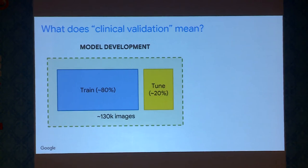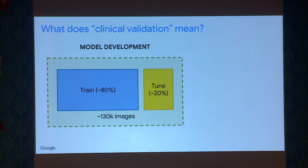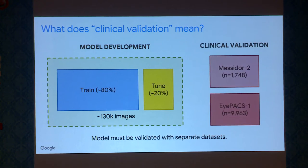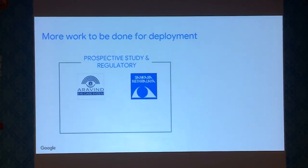When we talk about the performance of the model, one really important thing is to carefully distinguish between training error and validation error. Because a system learns from examples, it tends to perform better on the examples it was trained on. So it's important to have a completely separate dataset to evaluate performance. Even better, if we can fix the model and test with data collected later, that's a prospective research study. We are now working with Aravind and Sankara to do prospective research.